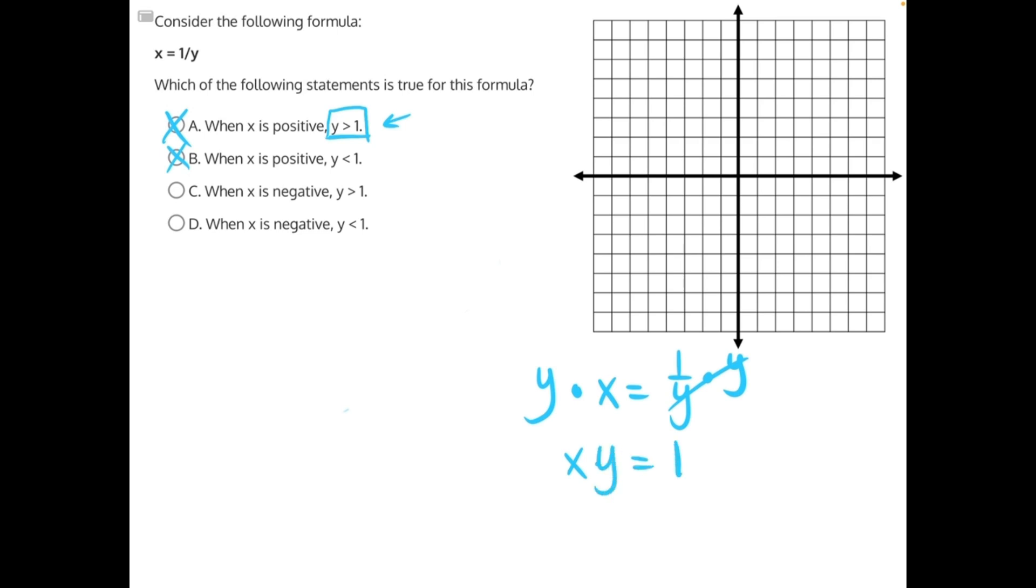This shows us a bit more clearly that these two numbers, x and y, have to have the same sign, because the result is positive. Whenever you're multiplying two numbers, same sign yields a positive result, and different signs yield a negative result.